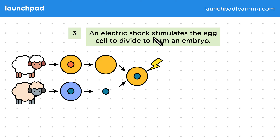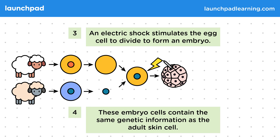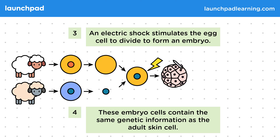An electric shock stimulates the egg cell to divide to form an embryo. These embryo cells contain the same genetic information as the adult skin cell, because the embryo is made from the division of this cell containing the adult body cell nucleus.